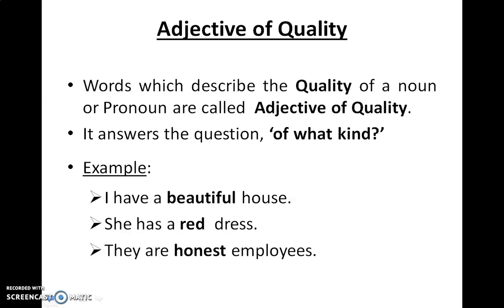Words which describe the quality of a noun or pronoun are called adjectives of quality. This answers the question 'what kind.' For example: 'I have a beautiful house' — what kind of house? A beautiful house. 'She has a red dress' — what kind of dress? A red dress. 'They are honest employees' — which kind of employees? Honest employees.